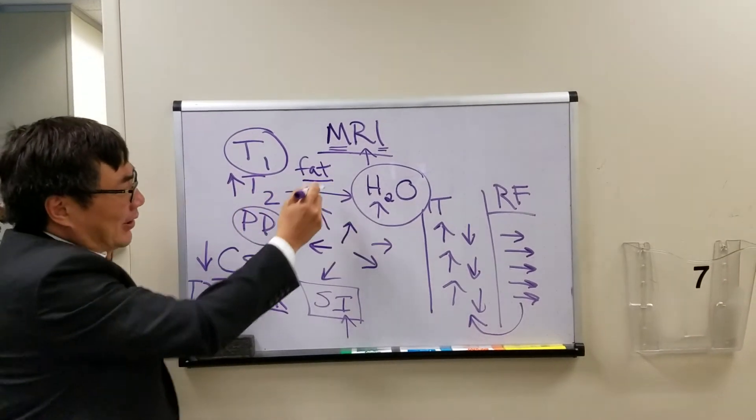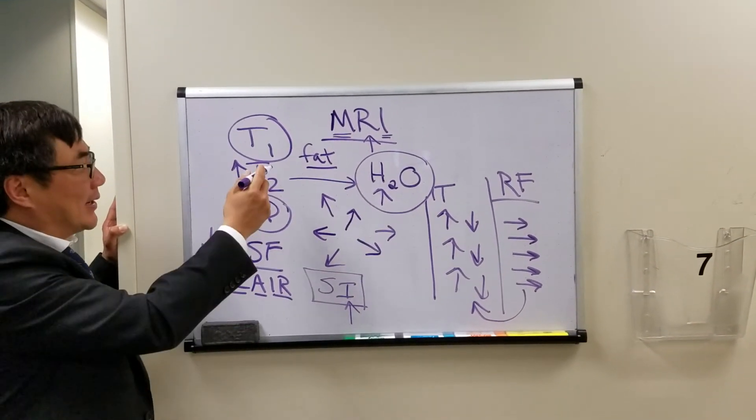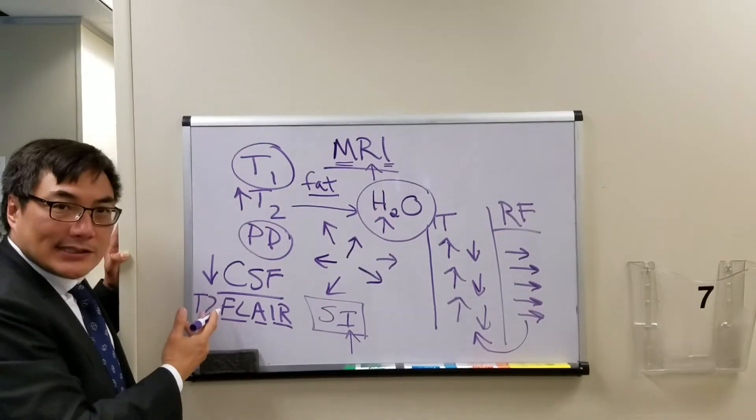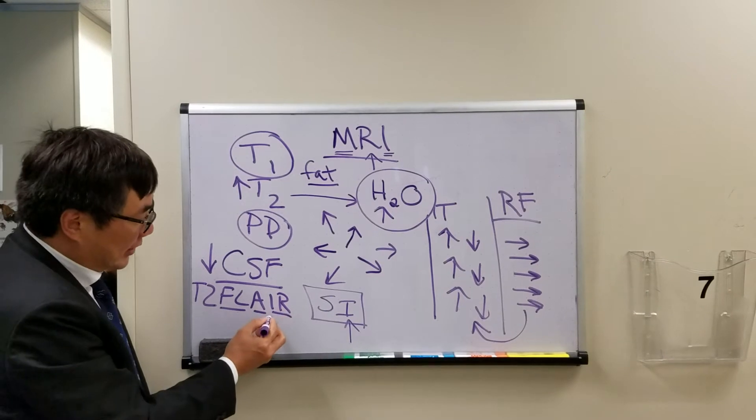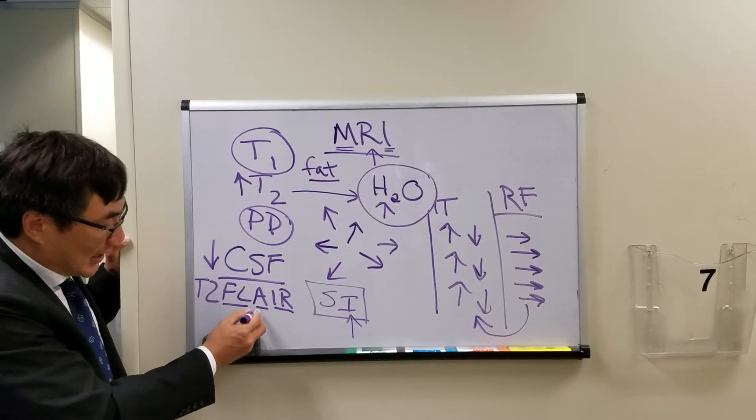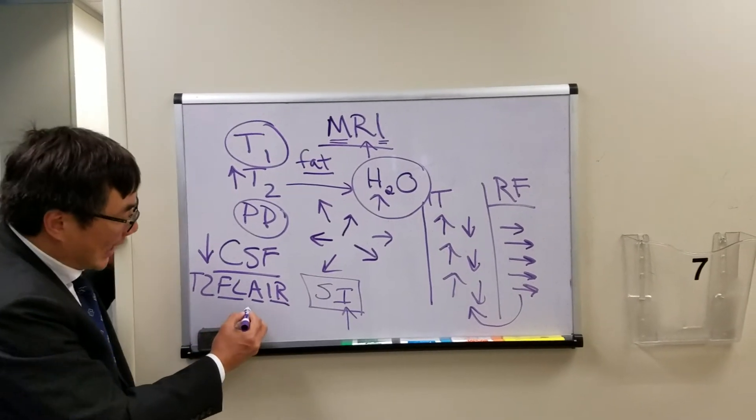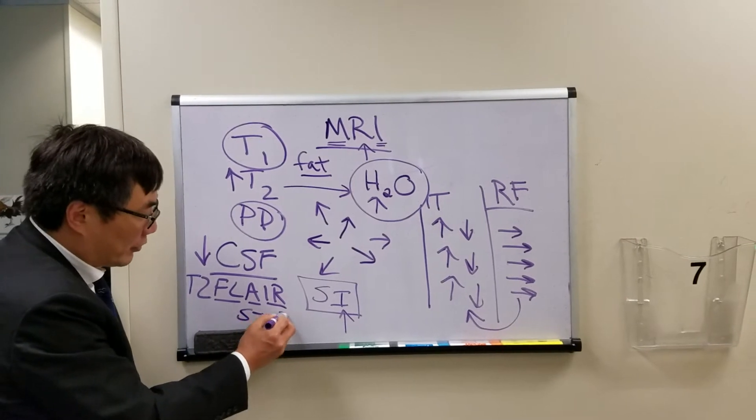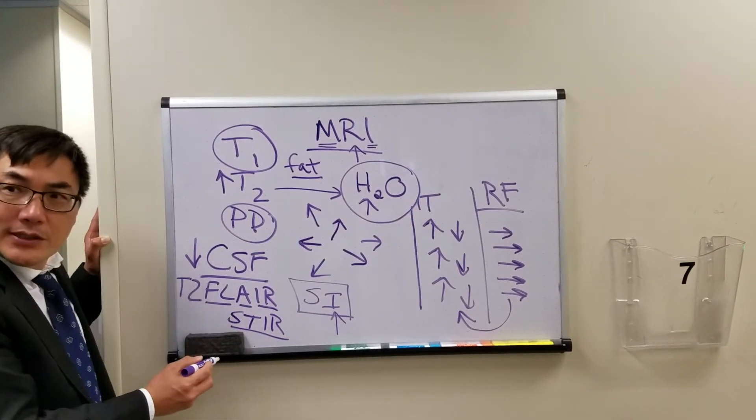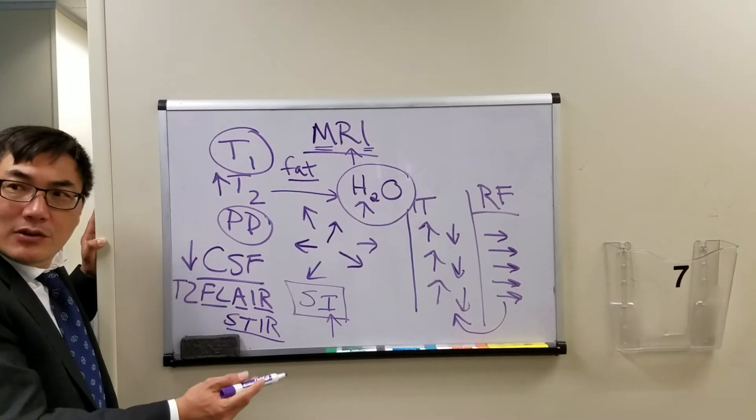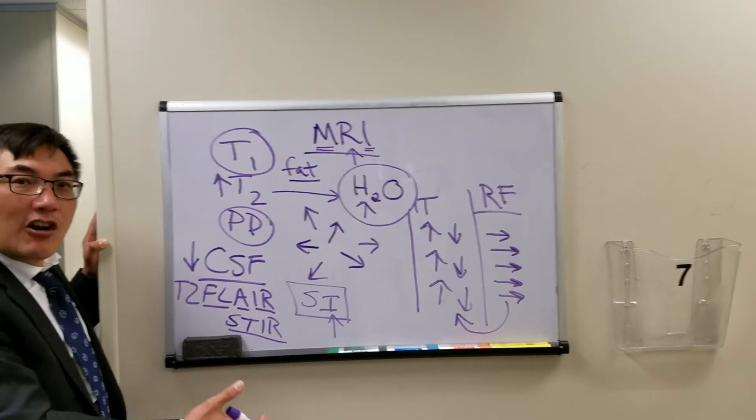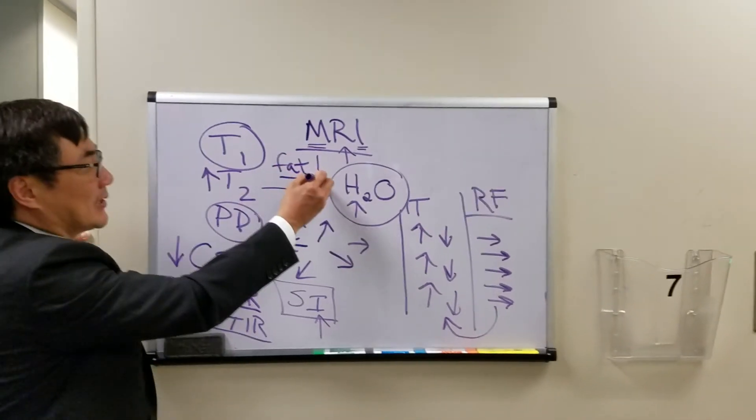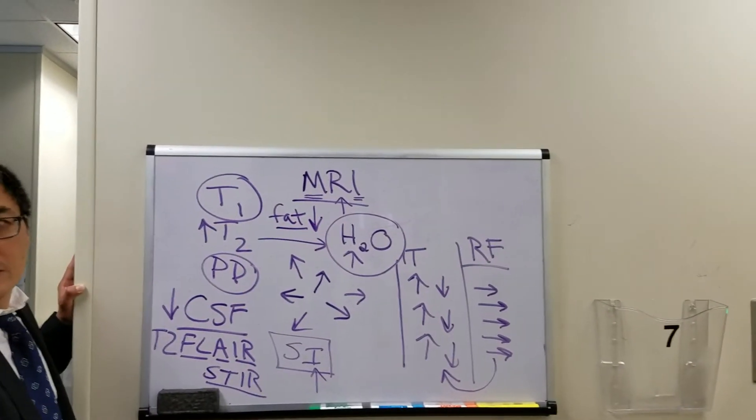However, the bad part is fat is bright on T1, but it's too bright. So just like CSF is too bright on T2, fat is bright on T1. And so we'd like to use an inversion recovery to attenuate the fat signal, and that is called short-tau inversion recovery sequence, or fat suppression, or fat saturation. So fat sat and fat suppression, STIR, all of these are fancy ways for suppressing the fat signal and reducing the signal on T1.